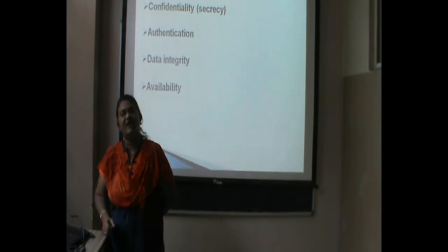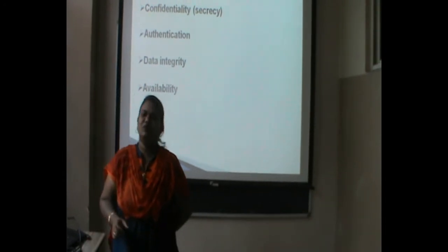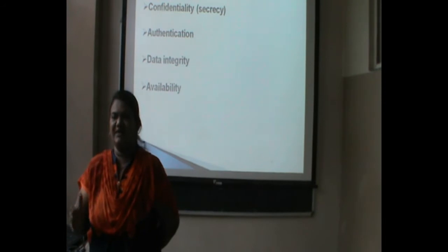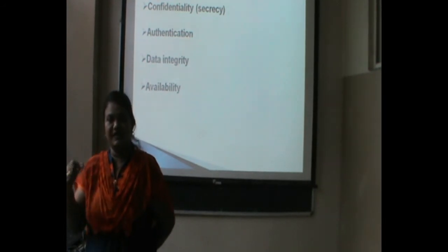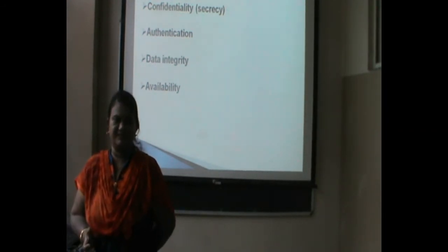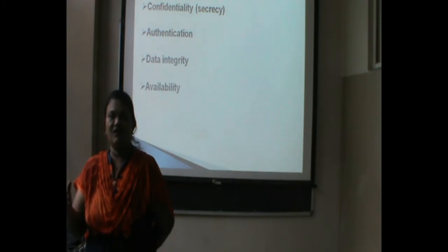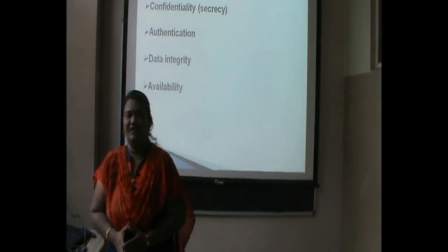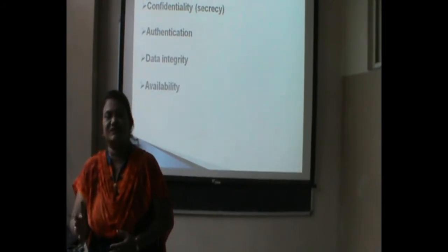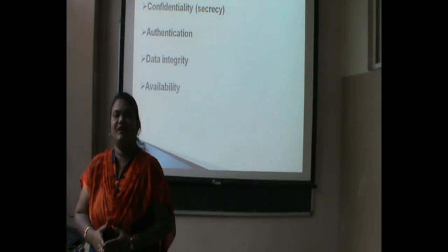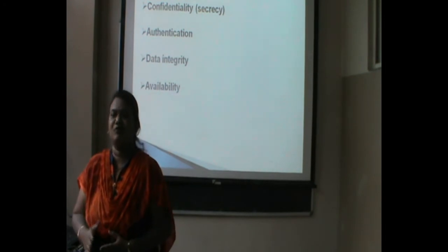Then the next one is availability. Availability means that when you are sending any particular messages or emails, whatever the authorized persons are, they should be able to reach those particular messages and always use that information. That is availability. These are the objectives of security, and how we can achieve these objectives — the basic answer is cryptography.